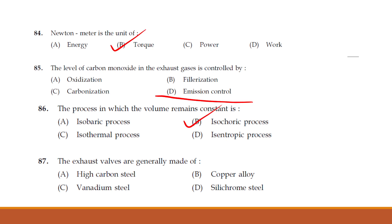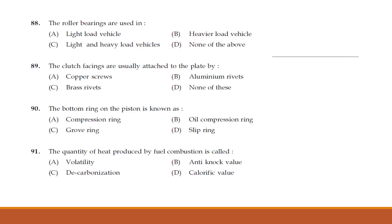Exhaust valves are generally made of: high carbon steel, copper alloy, vanadium steel, or silicrome steel. The answer is option D — silicrome steel.